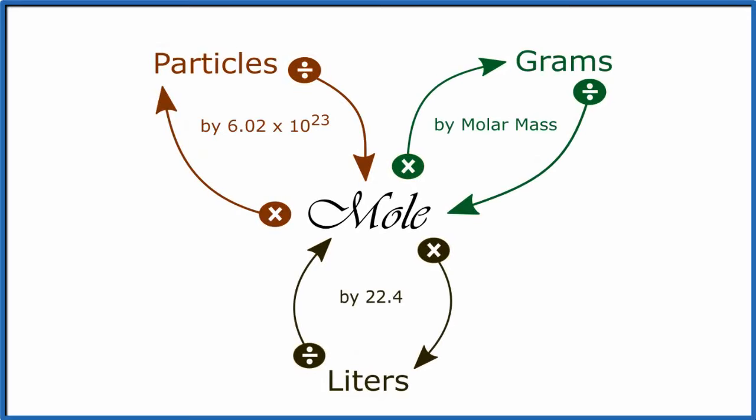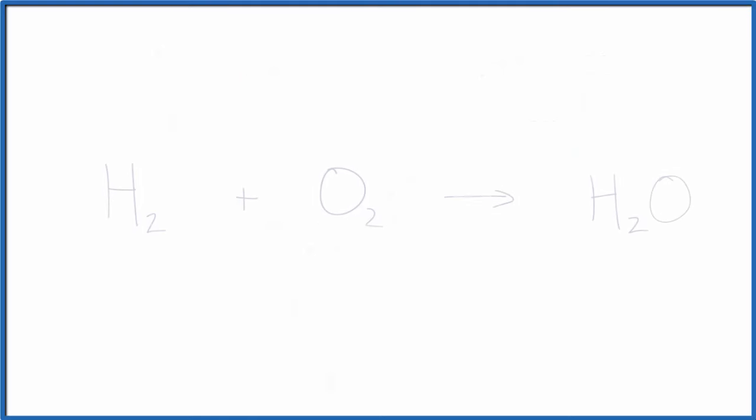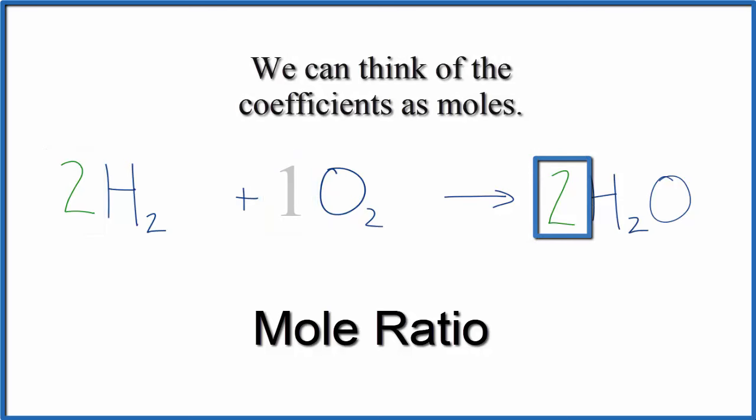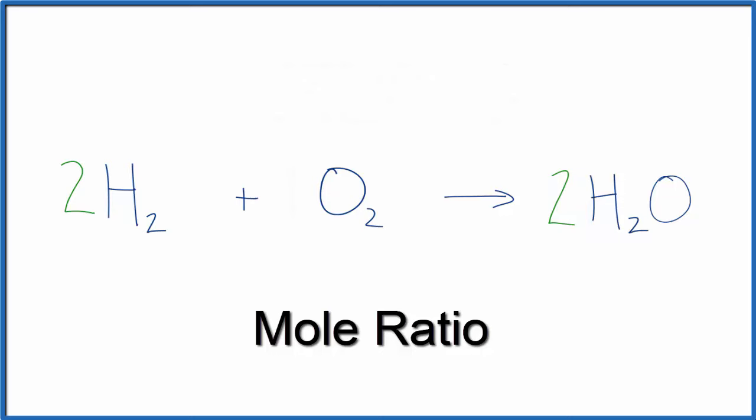So we know the mole is the bridge between the micro and the macro, counting particles and things like mass and volume. But let's relate it to a chemical equation. So here we have the formation of water from hydrogen gas and oxygen gas. We could balance the equation like this. And we can think of the coefficients as moles. In fact, we think of them as a mole ratio. So we have 2 moles of H2 plus 1 mole of O2. We get 2 moles of H2O. And we can use this ratio to solve more complex stoichiometry problems.